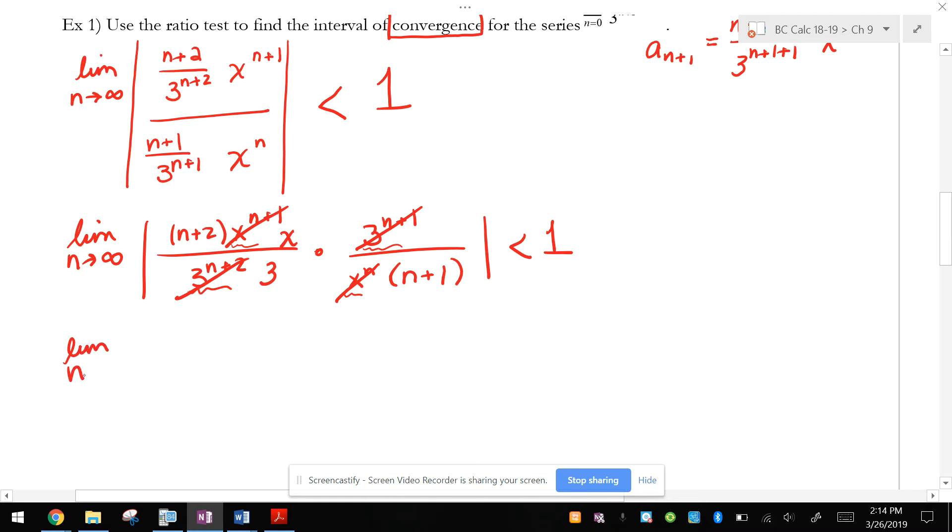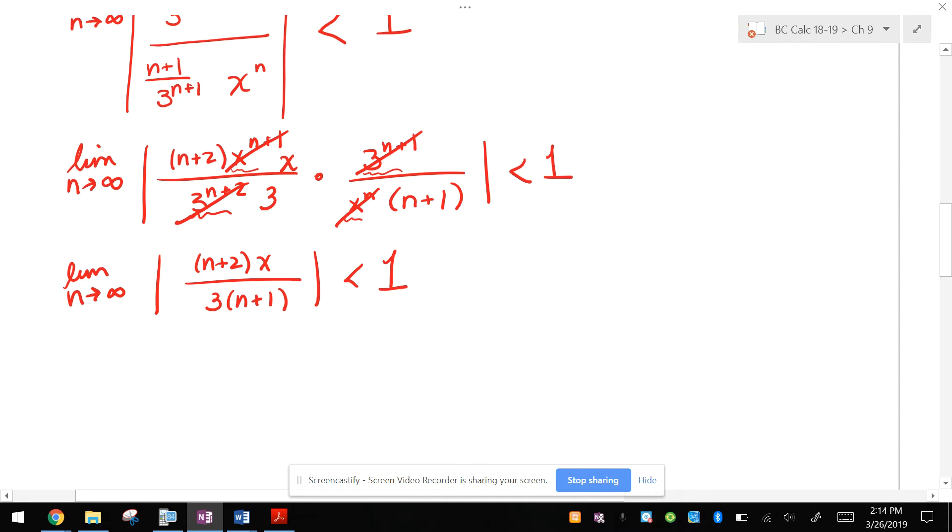So what I have now is the limit as n approaches infinity of n plus 2 times x over 3 times n plus 1. And now I'm going to do something really sneaky. I'm going to say, you know what?